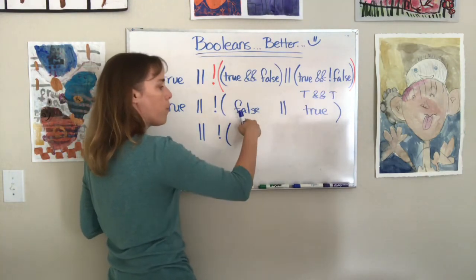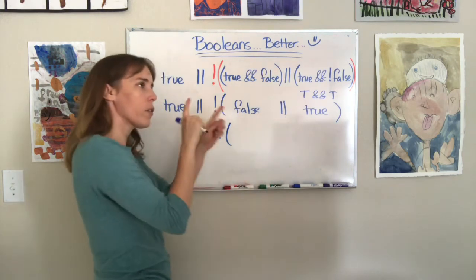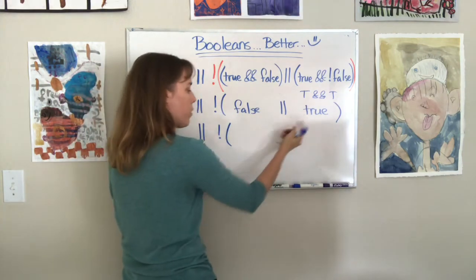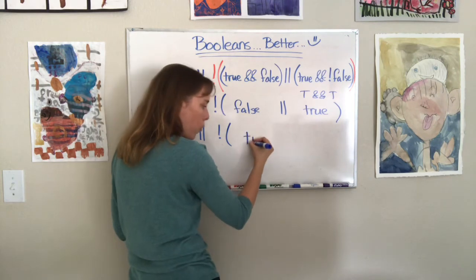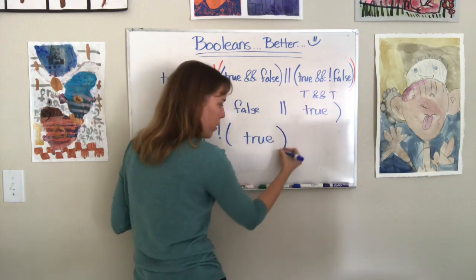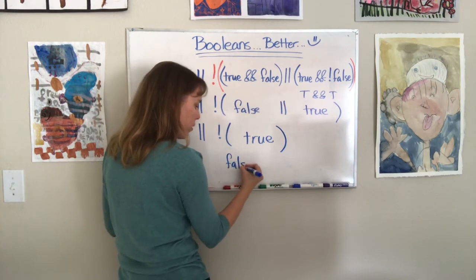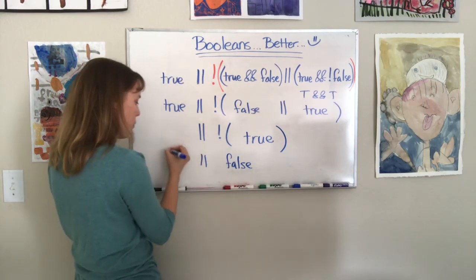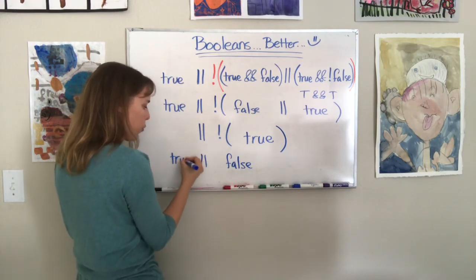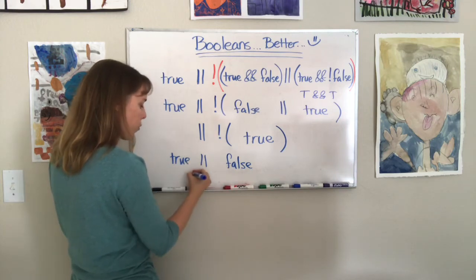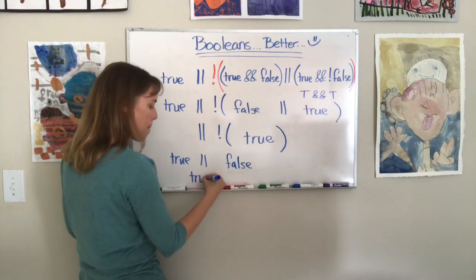So now we have this OR and we have true. So now I have to figure out what this is. So I'll leave this. Not false or true. So either one or the other. Well, this one is true. So the whole thing is true now. Not true. Oh, not true is false. And now I'm bringing this down. True or false. Oh, that's just true.